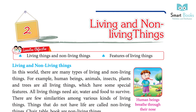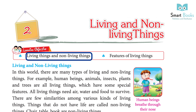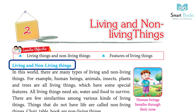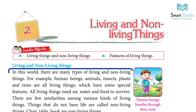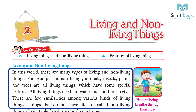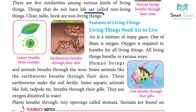Chapter 2: Living and Non-Living Things. Learning objective: living things and non-living things, features of living things. In this world there are many types of living and non-living things. There are few similarities among various kinds of living things. Things that do not have life are called non-living things.